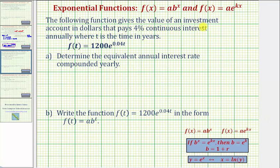The following function gives the value of an investment account in dollars that pays 4% continuous interest annually, where t is the time in years.